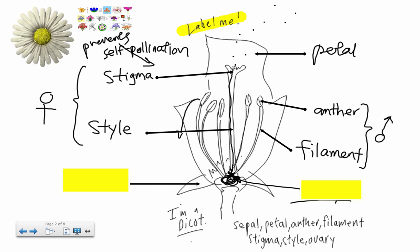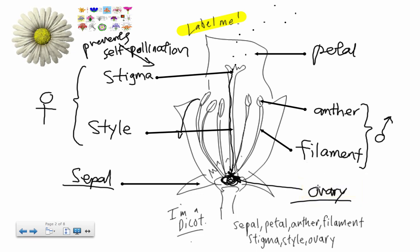Usually the female parts are either higher or they're tucked away, and they only become available during certain times to prevent the flower from self-pollinating. So in this case, if there's pollen here and it actually falls, it's not going to fall onto this plant. We're going to rely on our pollinators - birds and insects - to help with that. The sepals down here are just some of the first leaves supporting the flower.